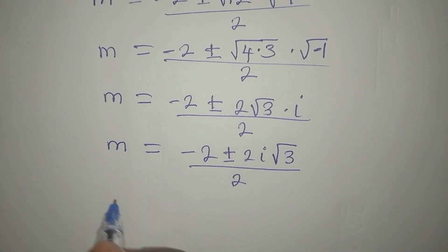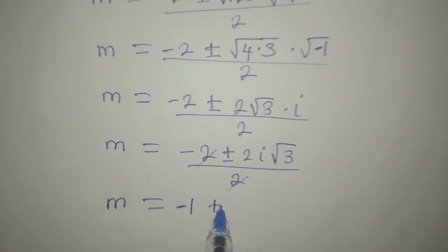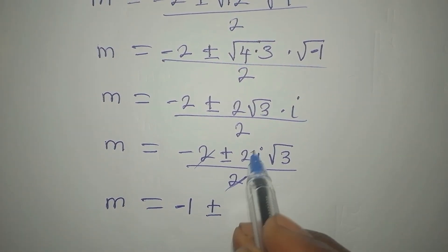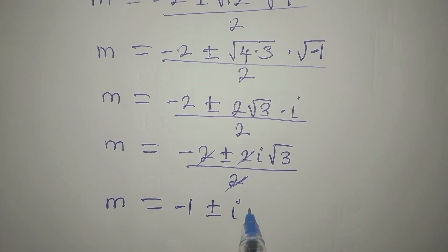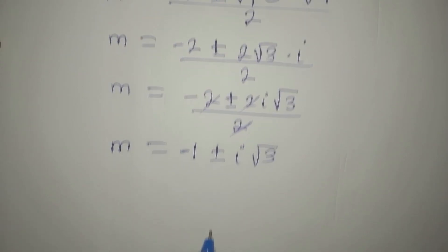Now, our m will be 2 into, that is minus 1, plus or minus 2 into this, we'll get just i root 3. So this is what we have, and this is 2 in 1.